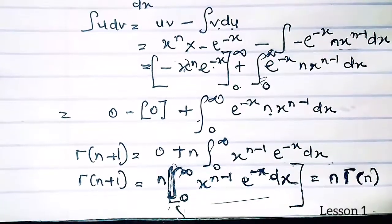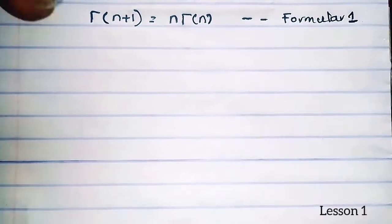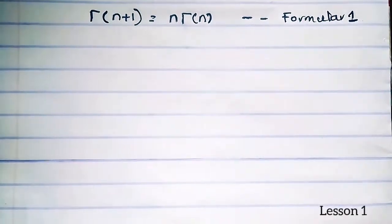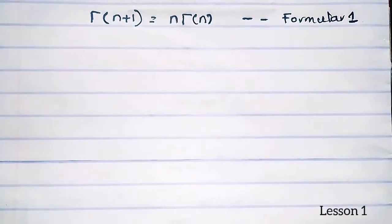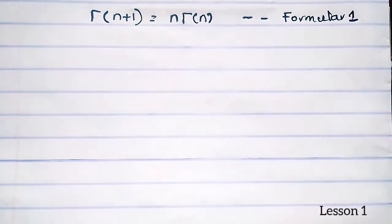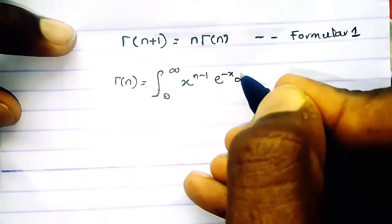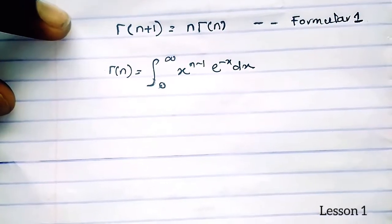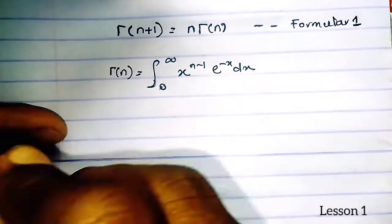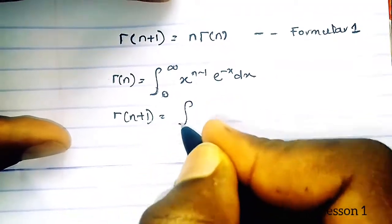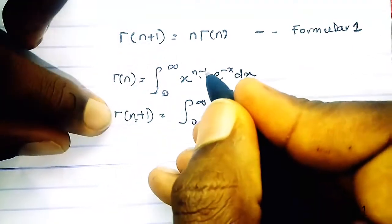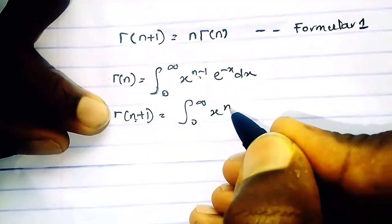So we have fully deduced Formula 1: Γ(n+1) = n · Γ(n). To recall, gamma of n equals the integral from 0 to infinity of x to the n minus 1 times e to the minus x dx, and gamma of n plus 1 equals the integral from 0 to infinity of x to the n times e to the minus x dx, obtained by replacing n with n plus 1.